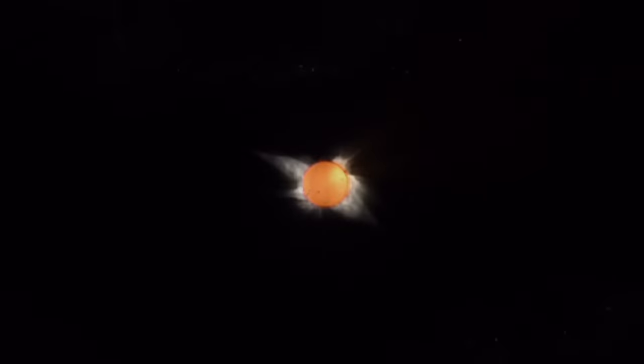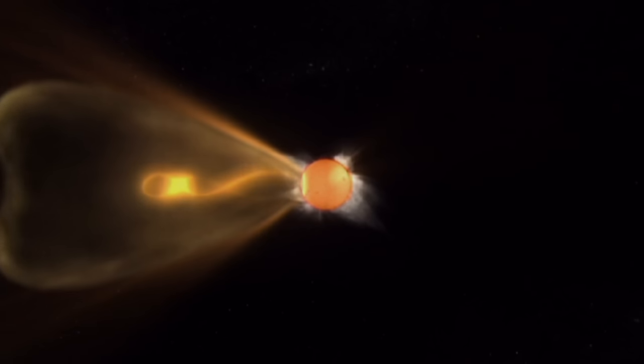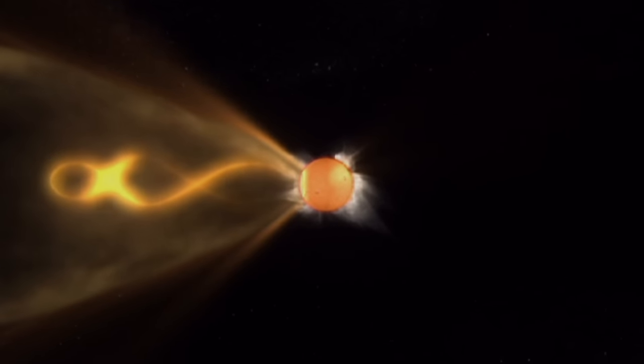This white spot might not look impressive, but it's the first image ever captured of the most powerful event in our solar system. It's called a coronal mass ejection, or CME.